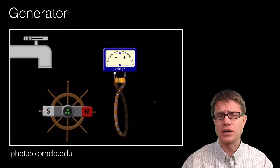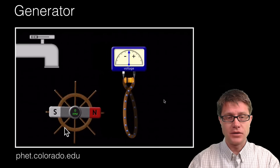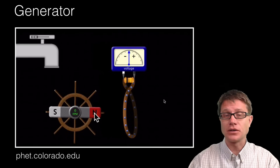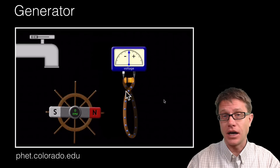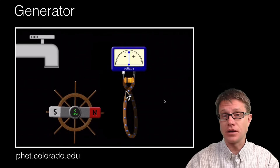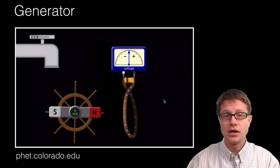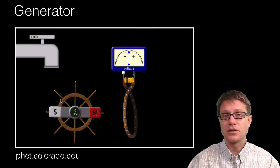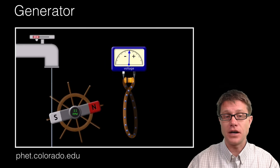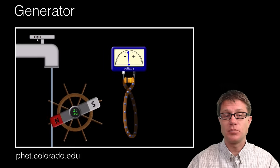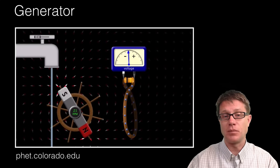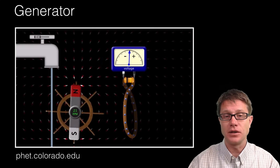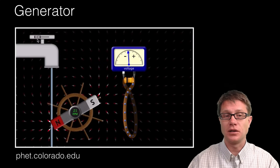Another way to look at this would be through a generator. In this setup I have a magnet on a wheel so that I can spin that magnet. I have my wire and I am trying to induce current inside that wire. Watch what happens now when I start to turn on the water inside that faucet — it is changing the position of the magnet. As it changes the position of the magnet, it changes the magnetic field. You can see the magnetic field lines are changing, and so I am starting to get a little bit of current.